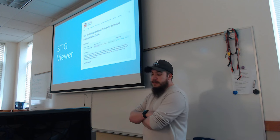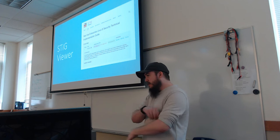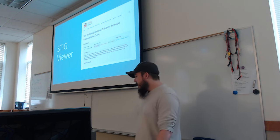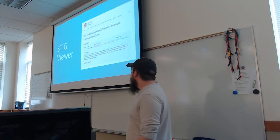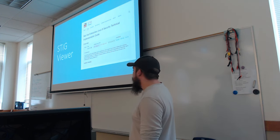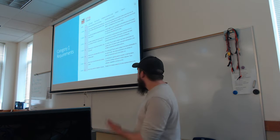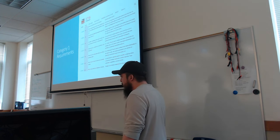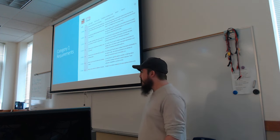For this we use the STIG Viewer — a program the Department of Defense makes that you can put on your system. It'll scan the entire system and tell you which requirements you currently meet and which you're not meeting, with guidelines on how to meet them. I have STIG Viewer up for Red Hat 8 and you can see there are 21 category ones I'm not meeting, 326 category twos, and 28 category threes. I could keep scrolling on this for 10 minutes going through these requirements.